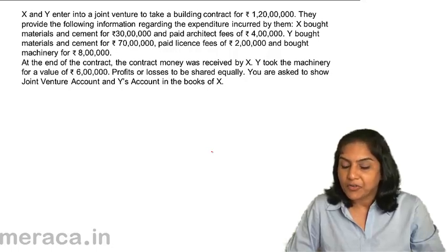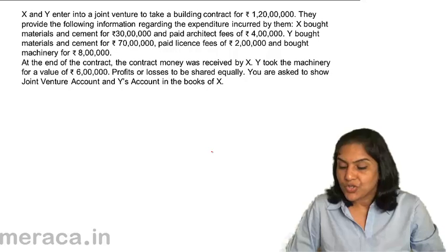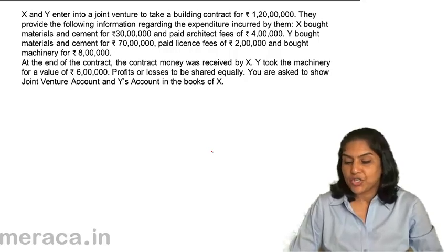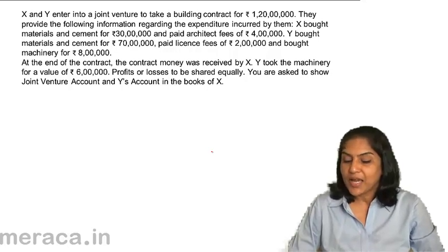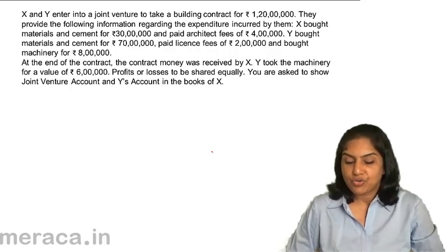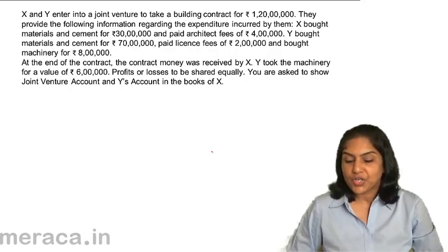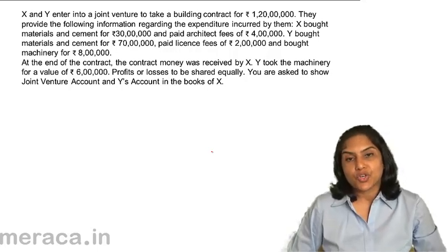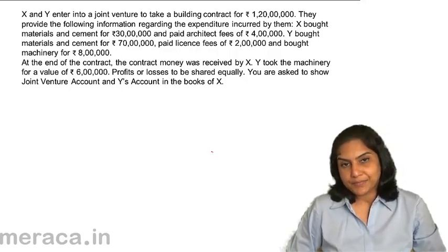At the end of the contract, the contract money was received by X. Y took the machinery for a value of 6 lakhs. Profits and losses are to be shared equally, and you are asked to show the joint venture account and Y's account in the books of X.